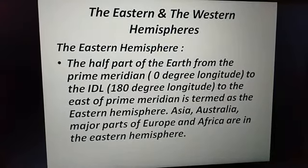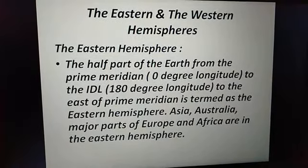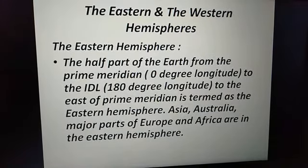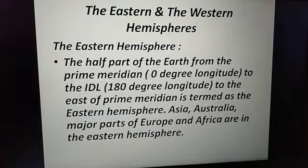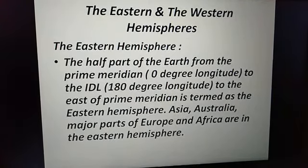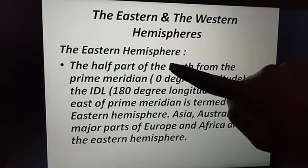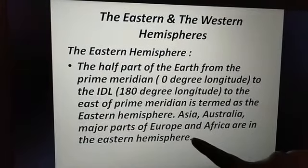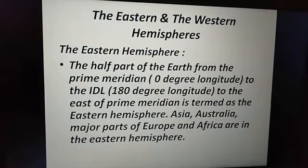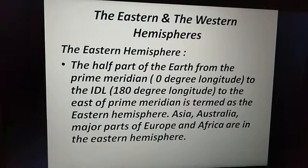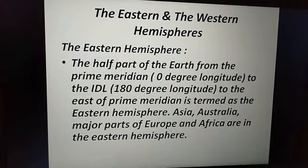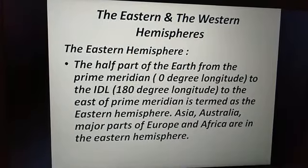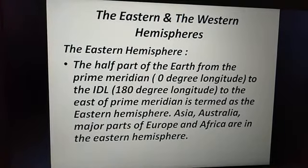The eastern hemisphere is the half part of the earth from the prime meridian (0 degree longitude) to the international date line (180 degree longitude), to the east of the prime meridian. Moving east from 0 degrees and completing a half circle covers the eastern hemisphere. Continents in the eastern hemisphere include Asia, Australia, major parts of Europe, and Africa.